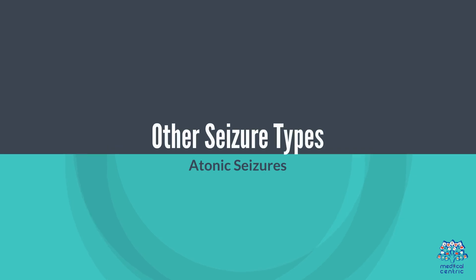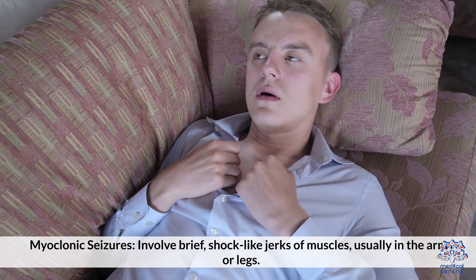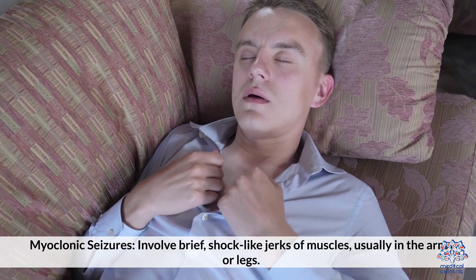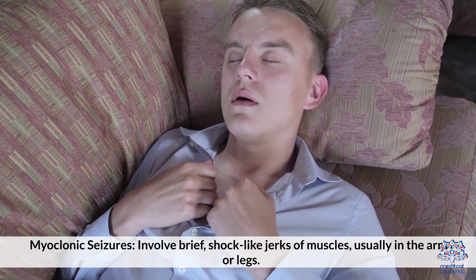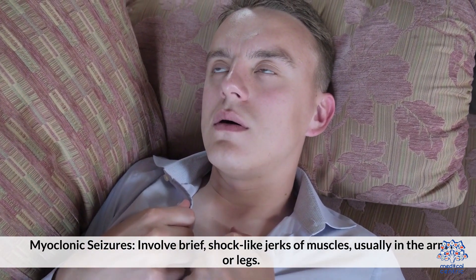Other seizure types: Atonic seizures, also known as drop attacks, cause a sudden loss of muscle tone, leading to falls. Myoclonic seizures involve brief, shock-like jerks of muscles, usually in the arms or legs.